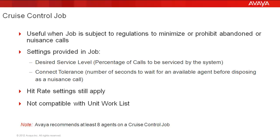Based on these two parameters, the system's algorithm determines the appropriate pace at which it should dial. If there are enough available agents sitting idle, the system increases the dialing pace; if there are not many available agents and the system is having to wait before finding an available agent, it decreases the pace. Basically it tries to dial at the maximum pace it can so that agents are not sitting idle and the two threshold levels are not exceeded.